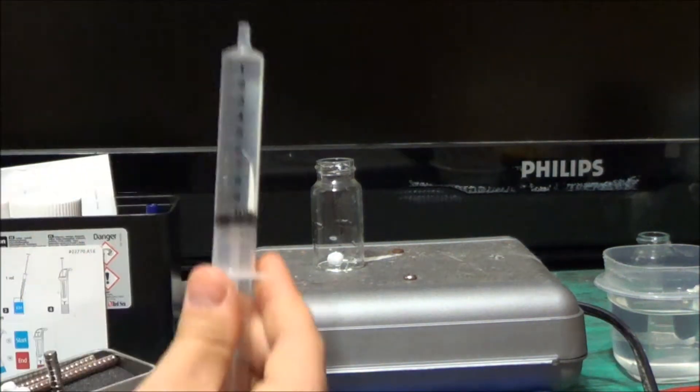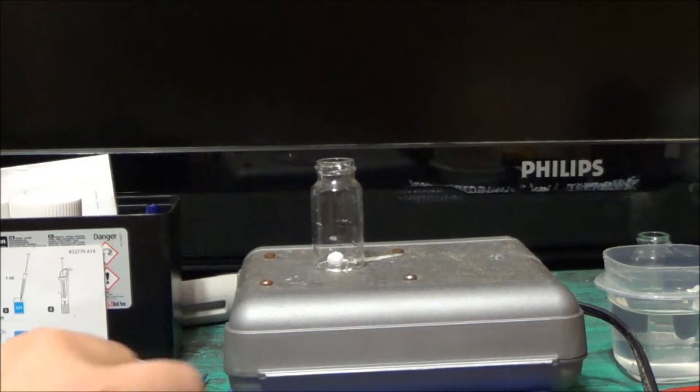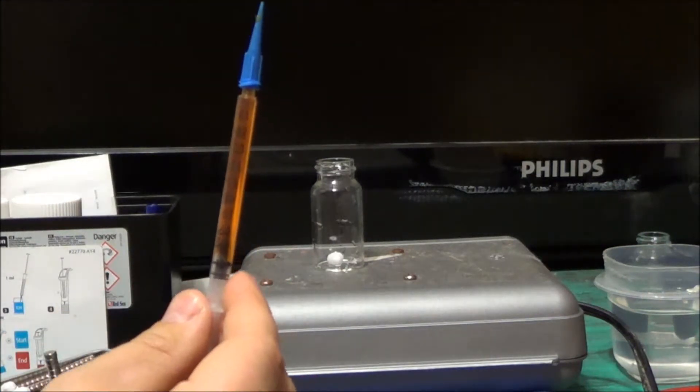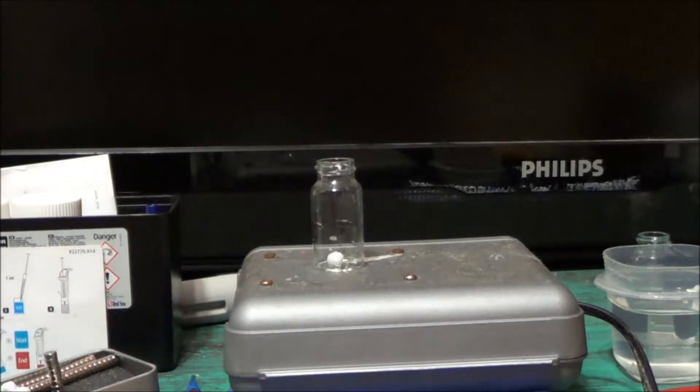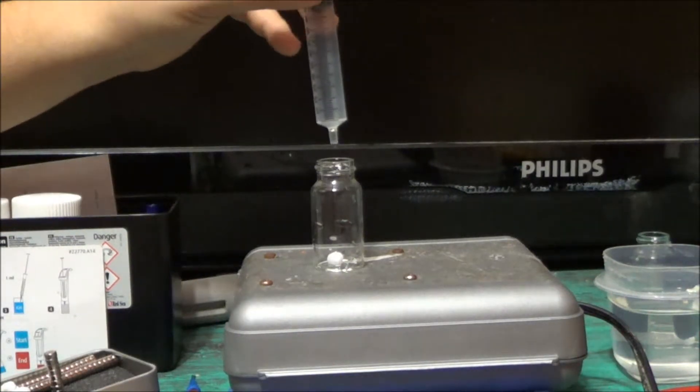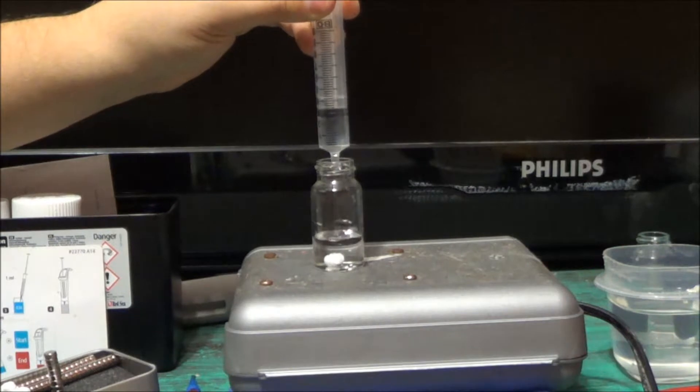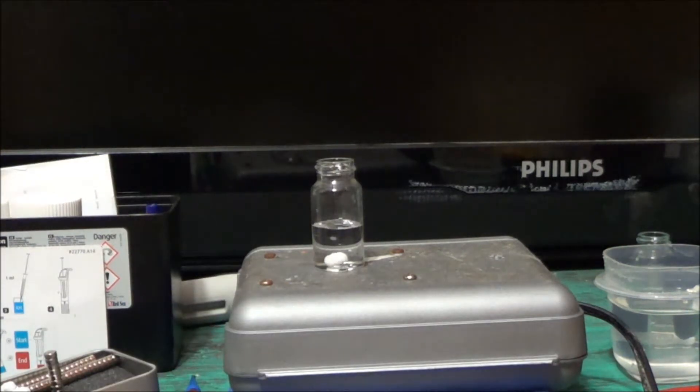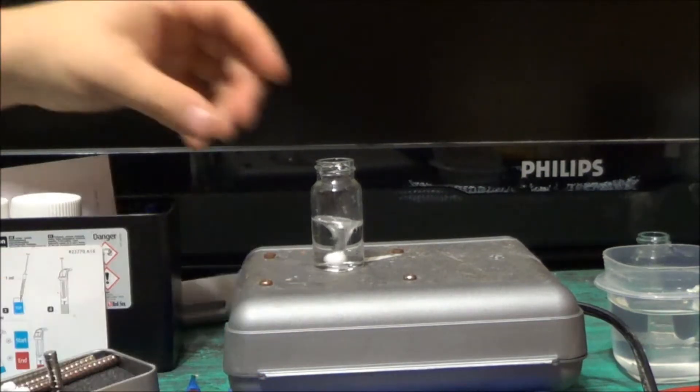I have my 10 mLs already drawn up of my tank water and I have 1 mL of the alkalinity solution. So I'm going to go ahead and inject the 10 mLs into the bottle and then we're going to plug in our magnetic stirrer.